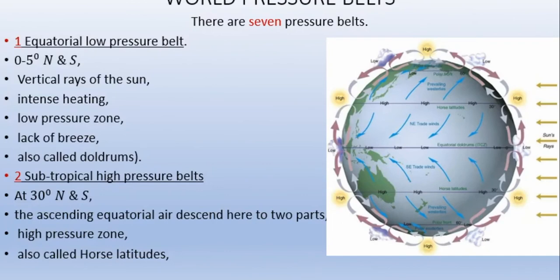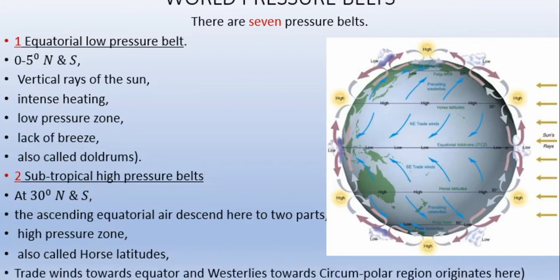The subtropical high pressure belt is also known as horse latitudes. You have already studied the different latitude zones — equatorial region, temperate zone, and frigid zone — and these also belong to the pressure belts. From the horse latitudes, trade winds originate towards the equator and westerlies originate towards the circumpolar regions. Trade winds also originate here.